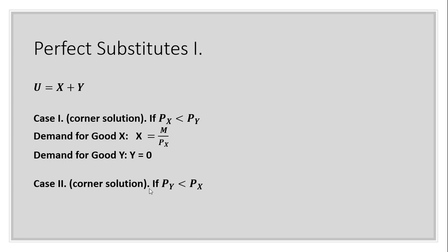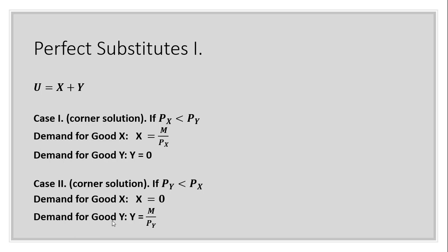Case two is another corner solution. If the price of good y is less than the price of good x, the consumer will buy nothing but good y. So the demand for good x is zero, and the demand for good y looks like this. Finally, case three: if the price of good x equals the price of good y, units of good x and good y demanded will sum to income divided by the price p, since p subscript x equals p subscript y.